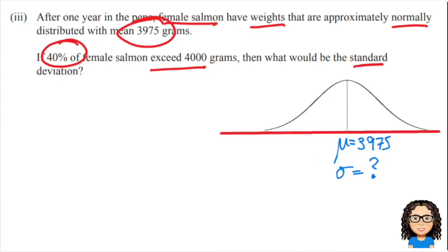So 40% exceed 4,000 grams. Think first of all in terms of your axis there. Remember, 0 is down here somewhere, the numbers are getting bigger. The mean is 3,975, so that tells us 4,000 is going to be somewhere above that. So I'm just going to draw a line there, and that's going to be at the value of 4,000. And it says 40% exceed, so exceed is a word that means above 4,000. So I'm going to shade in the area above that, and that area is 40%.